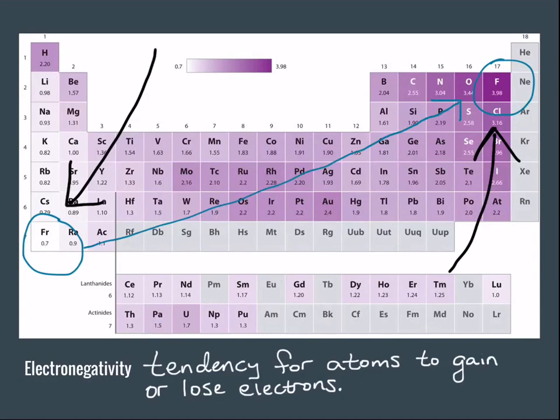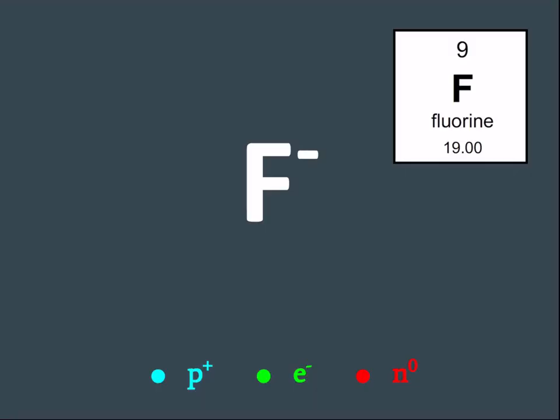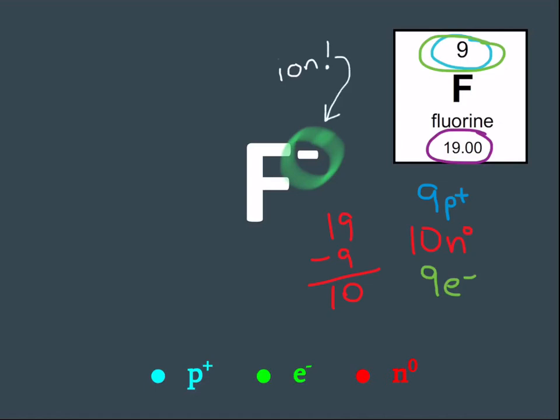How about we do fluorine as our first example? So normally fluorine has nine protons. And when I do the math for the number of neutrons, 19 minus nine, there are ten neutrons. Now if fluorine isn't charged, like in this example that I'm doing right now, there are nine electrons. The protons and electrons are equal to each other.